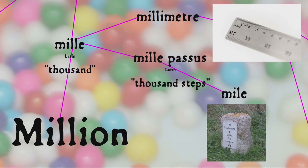by the way, we get the prefix 'milli', as in millimetre, a thousandth of a metre, and the word mile, which was originally a thousand paces.